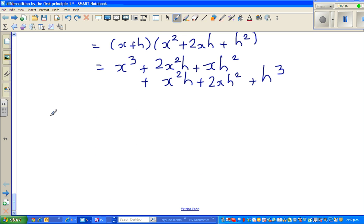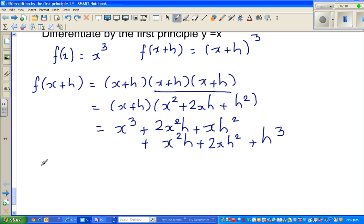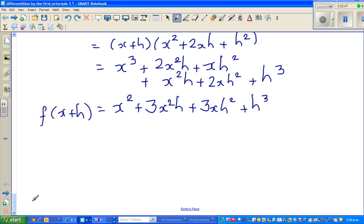So f(x+h) will simplify to x³, adding the like terms, this is 3x²h plus this is again 3xh² plus h³. In the next video I'll show you how to do it smarter by using the binomial formula.